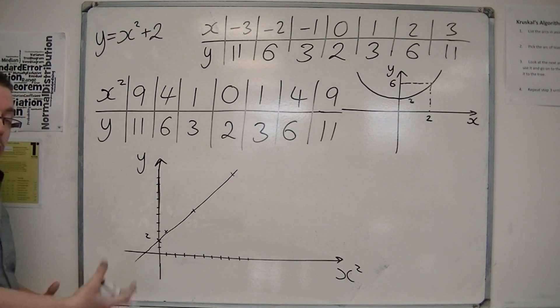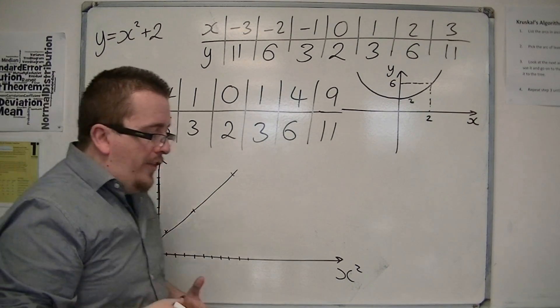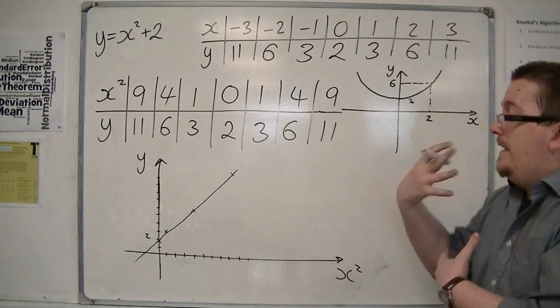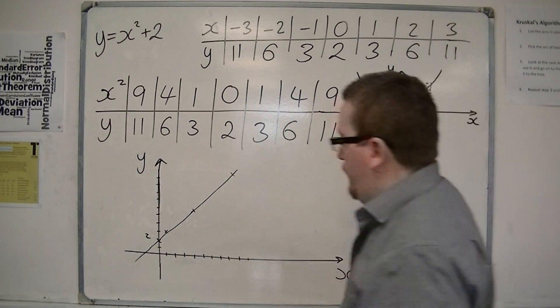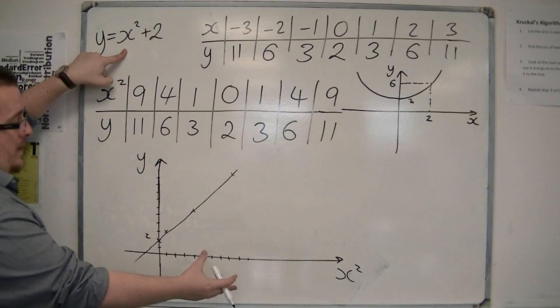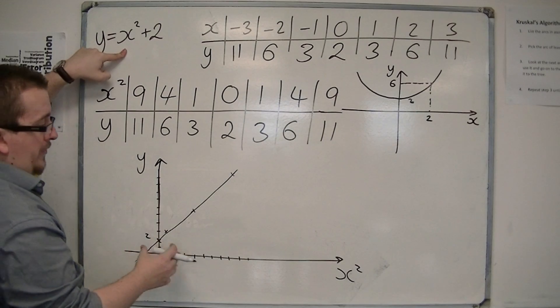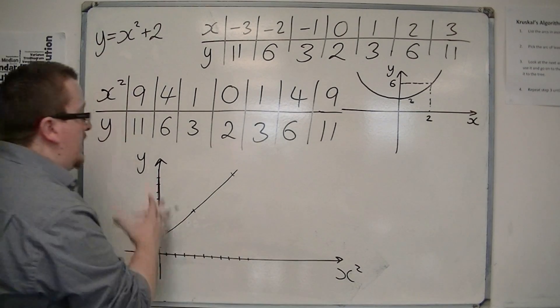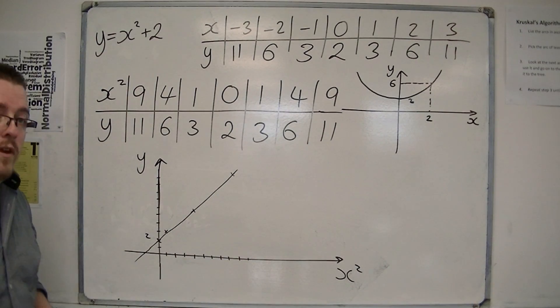And with a straight line, things are much more easy to predict. So in actual fact, what I have here is y equals x squared plus 2, but plotted with x squared and y. And what I'm getting is a straight line equation.